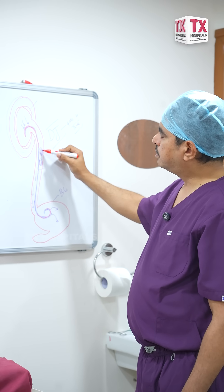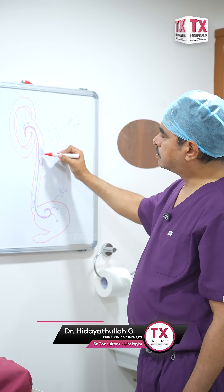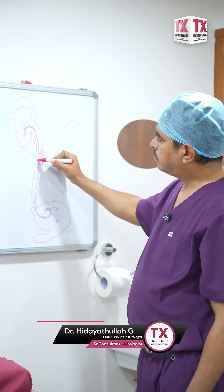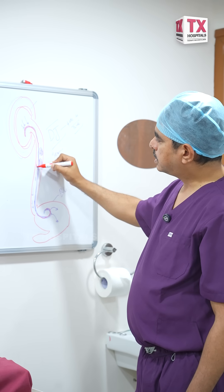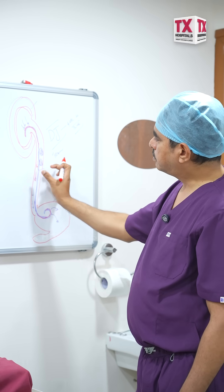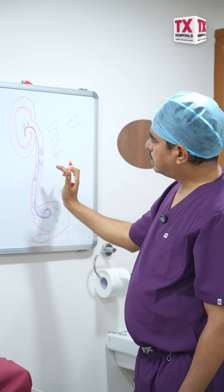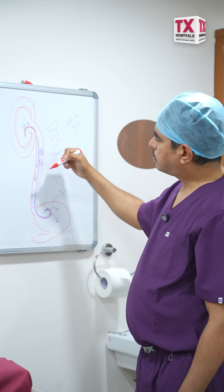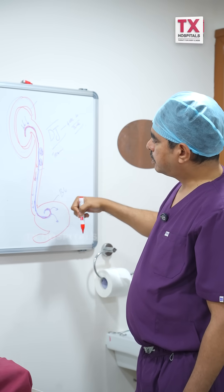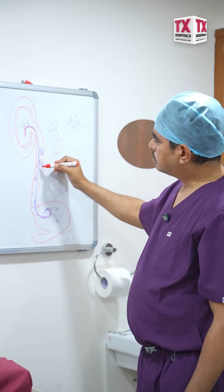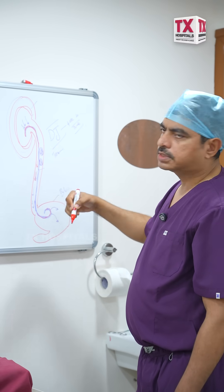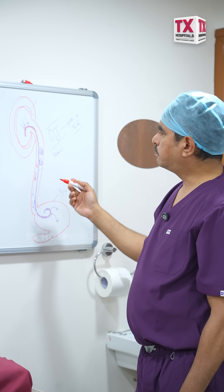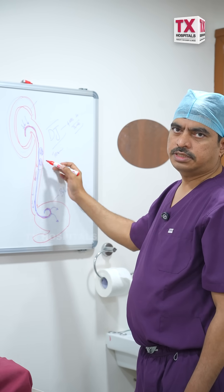Another reason is when we break the stone, the pieces of stone will pass beside the stent and help the ureter to dilate. Post-operatively, when we remove the stent, the stone pieces will pass easily. This is one of the reasons for placing the DJ stent.